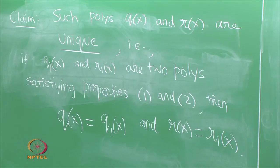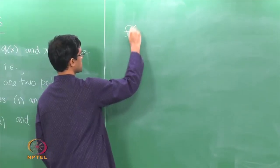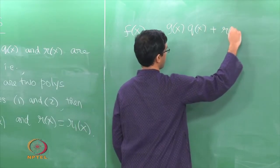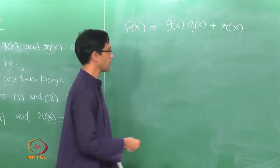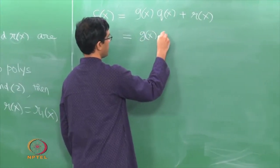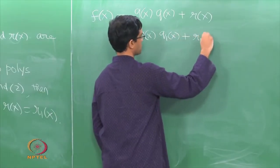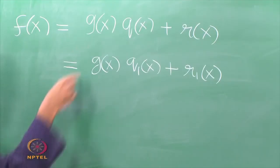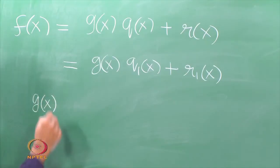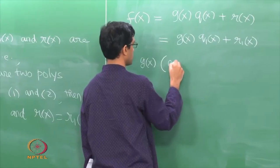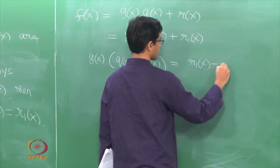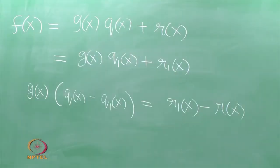Let us try and prove this — it is just a very elementary argument. We start with the second property: F of X equals G of X times Q of X plus R of X. That is the original Q and R obtained by the long division procedure. Now we are claiming there is another pair Q1 and R1 with the same property, so F of X equals G of X times Q1 of X plus R1 of X. Subtracting these 2 equations, we conclude that G of X multiplied by Q minus Q1 equals R1 of X minus R of X.